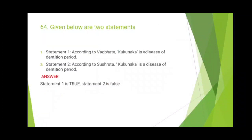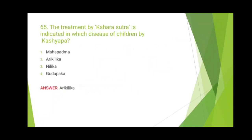The 64th question is an assertion-reason question regarding Kukunaga. Kukunaga is a disease of the dentition period according to Vagbhata — that is statement 1. Statement 2 says it is a disease of the dentition period according to Sushruta. Statement 1 is true but statement 2 is false. According to Sushruta, it is Dushthya Sanya Janiroga due to vitiated Vata, Kapha, and Rakta — and it is a Vatmaja Roga. The 65th question asks which disease of children by Kashyapa is treated with Shara Sutra. Agni Karma and Shara Sutra are generally not indicated in children, so learn the exceptional diseases. Here the answer is Arekelaka, which is Karkandu Gostana Tulleshova, treated with Dahana with Tapta Sneha, Ghoda, Chedana with Kshara, or Bhandanam with Kshara Sutra.